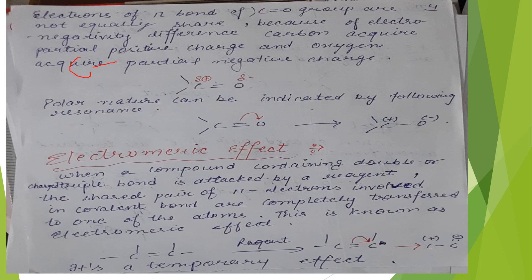In the carbonyl group, carbon and oxygen have an electronegativity difference. Oxygen is more electronegative.